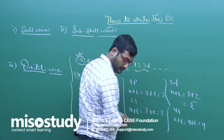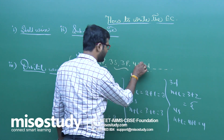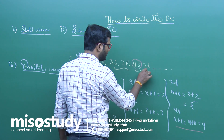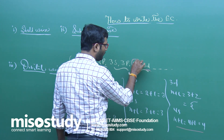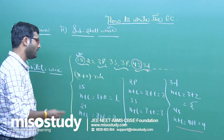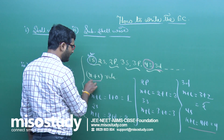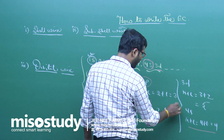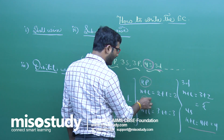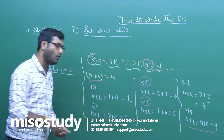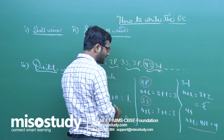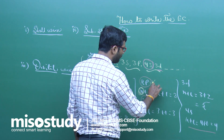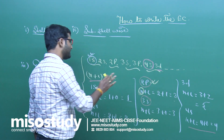Considering 4s and 3d: 4s has a lower n+l value (4) compared to 3d (5), so the electron will move into 4s first, then 3d. This is the n+l rule. If two sub-cells have the same n+l value — for example 2p and 3s both equal 3 — the electron will go first into the sub-cell with the lesser value of n, which is 2p, then 3s.